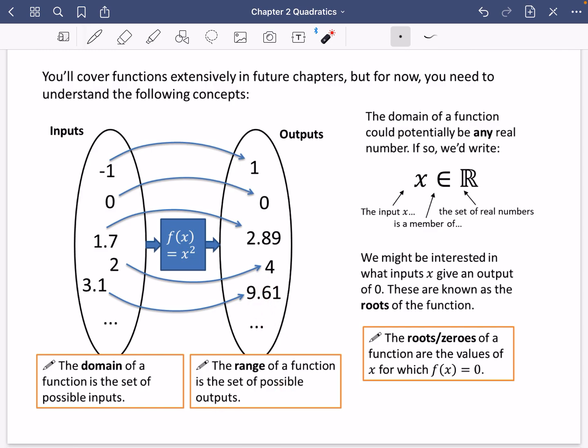Let's have a look at this. The domain of a function could potentially be any real number. If so, for this particular case, we could say that the input x, this weird e shape means is a member of, and this fancy r letter is the real numbers. The real numbers are every number that you can think of from normal maths: everything between infinity and minus infinity includes 0, fractions, decimals, thirds, all of them.